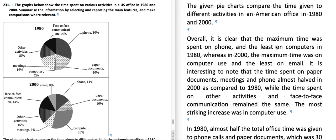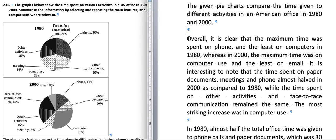Overall, it is clear that the maximum time was spent on phone and the least on computers in 1980, whereas in 2000 the maximum time was on computer use and the least on email. It is interesting to note that the time spent on paper documents, meetings, and phone almost halved in 2000 as compared to 1980, while the time spent on other activities and face-to-face communication remained the same. The most striking increase was in computer use.